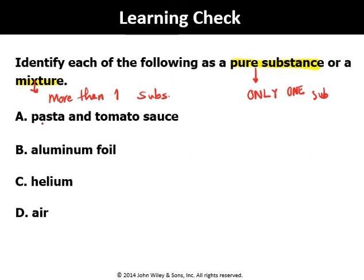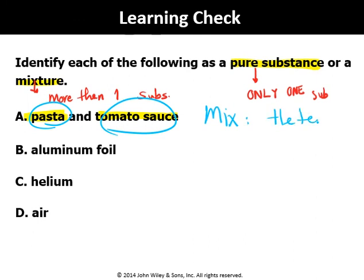For the first one — based on the terminology — we have two different pure substances, so you may say we have a mixture. My next question: what type of mixture do you have? Since you can see both components, we have a heterogeneous mixture. How about the next one — aluminum foil? We are only talking about aluminum, nothing else.